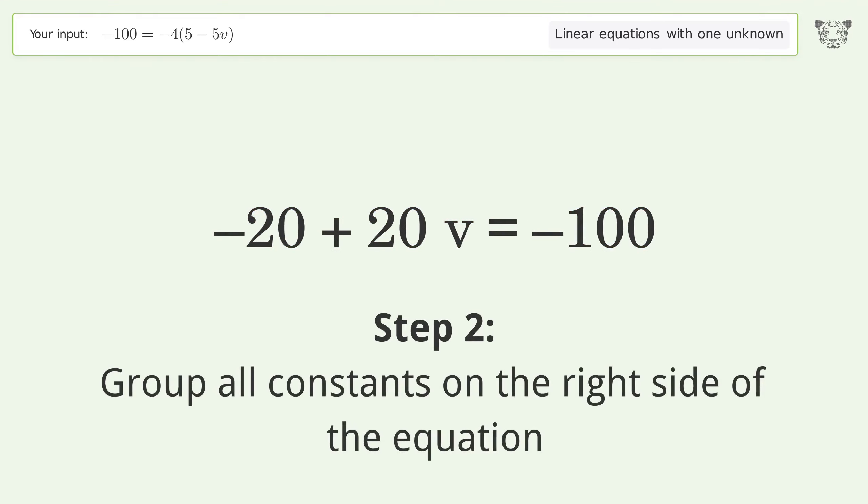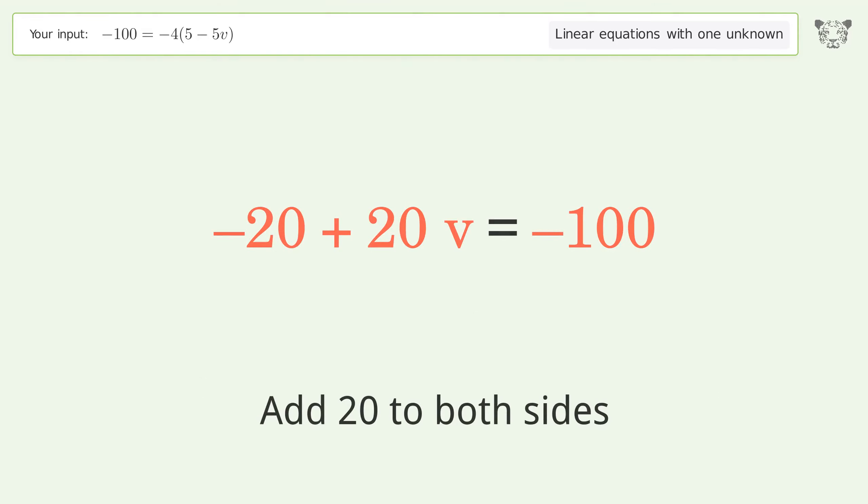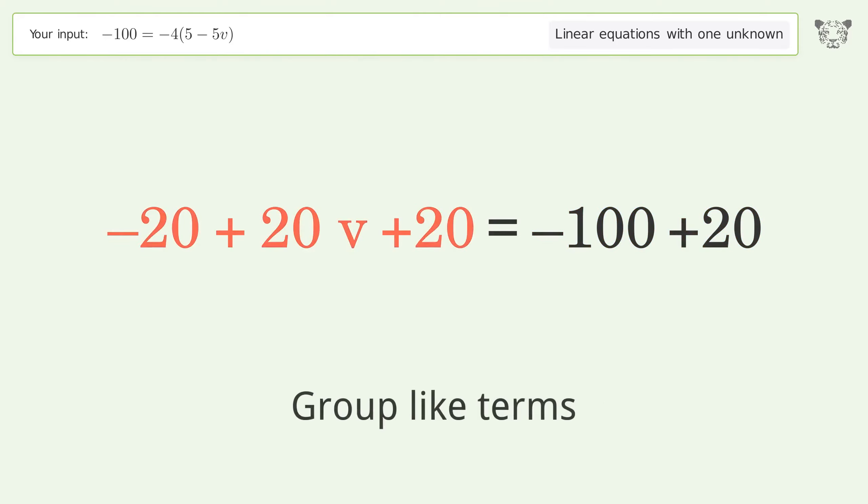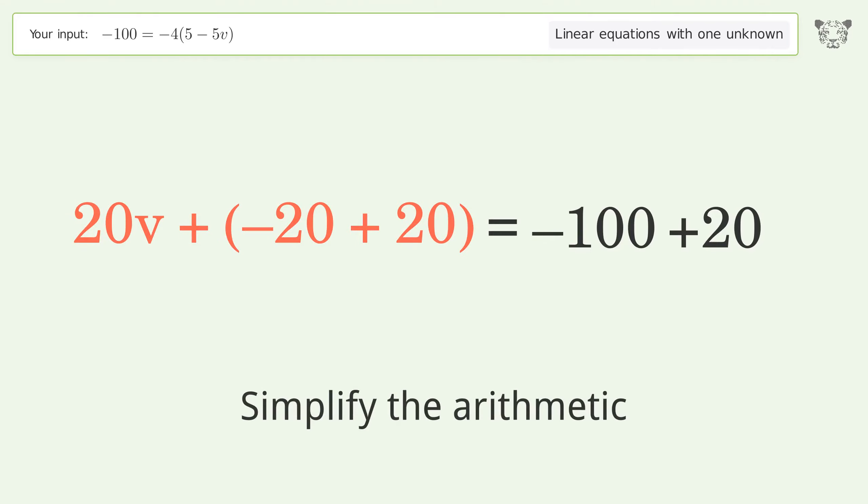Group all constants on the right side of the equation. Add 20 to both sides. Group like terms. Simplify the arithmetic.